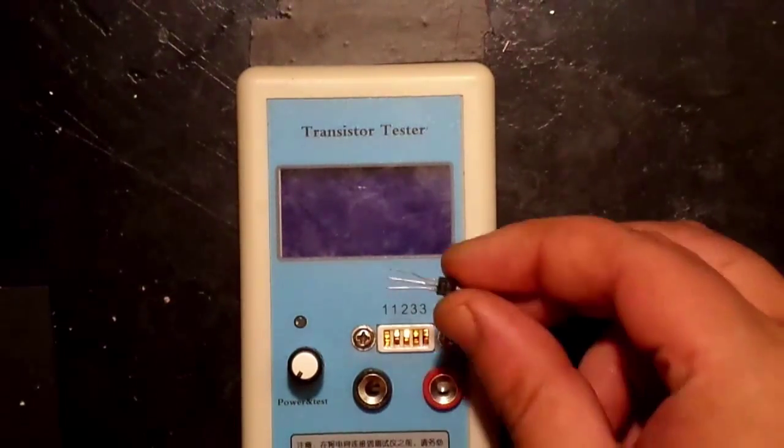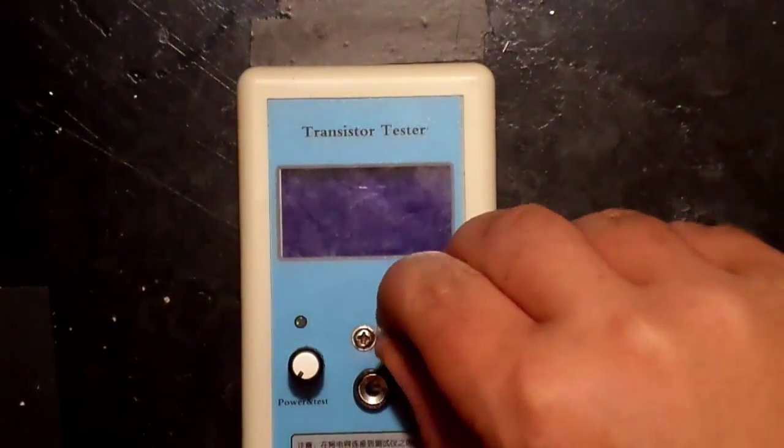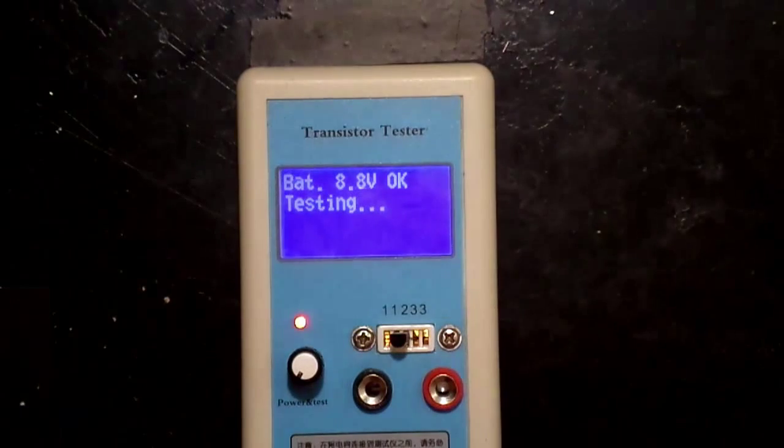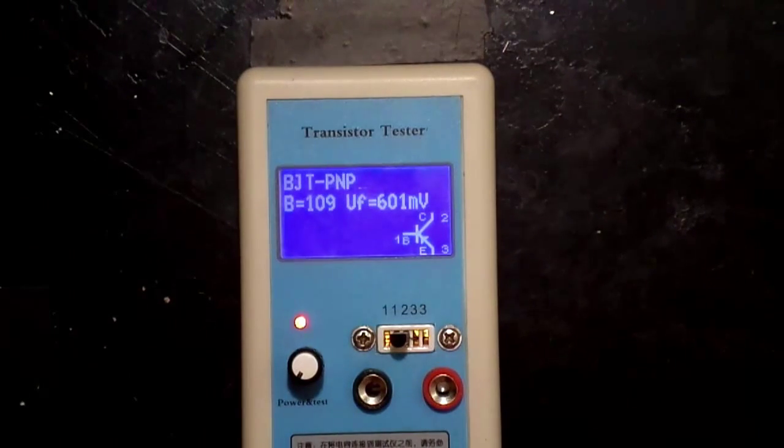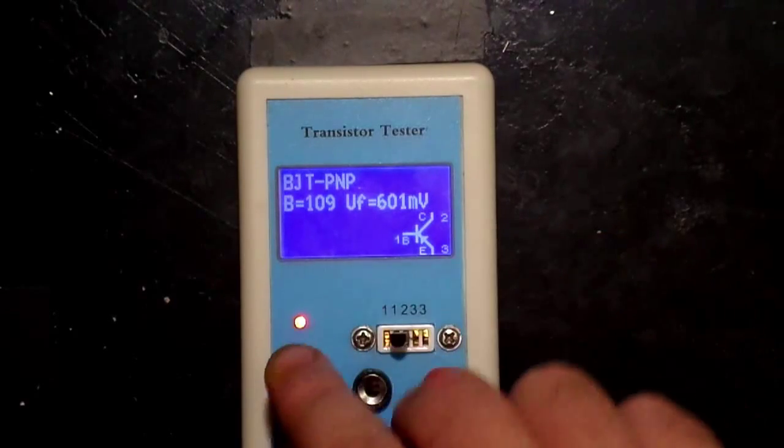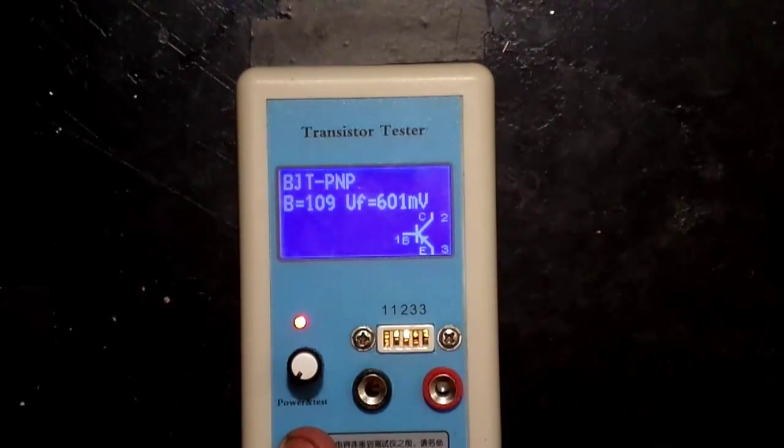First, I'm going to insert a transistor. And it's going to tell me what the emitter base and collector is, and if it's a PNP or a NPN transistor. It also gives me the base and the cutoff voltage.